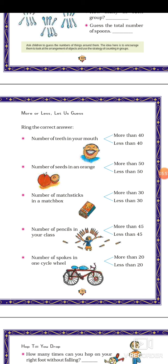Take a match box and count the match sticks. If it is more than 30, ring it, or if it is less than 30 — whichever it is, you make a round. Then number of pencils in your class — more than 45 or less than 45.